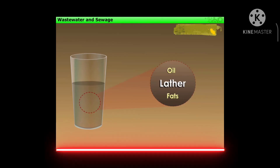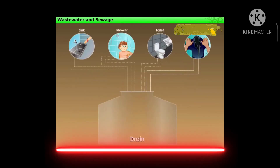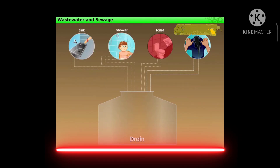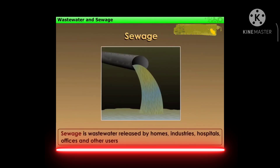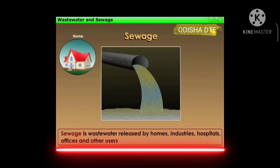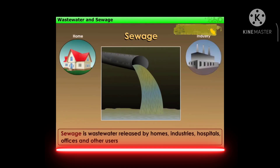The waste from households, factories, or agriculture land gets discharged into rivers or lakes. This waste can be in the form of liquid waste, garbage, or sewage. The harmful chemicals washing out of this waste can damage aquatic life.